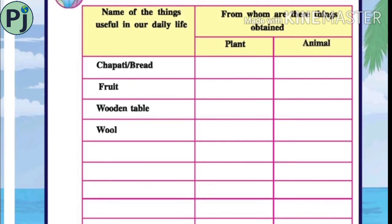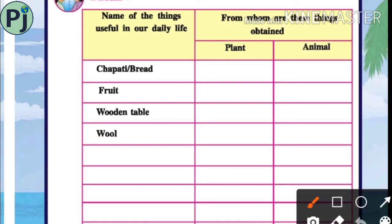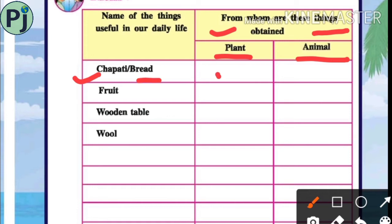Now see here — a table is given with the name of things useful in our daily life, and from whom these things are obtained. First one: chapati or bread, which we get from plants — tick on plants. Fruits — which we get from plants. Wooden table — which we get from plants.